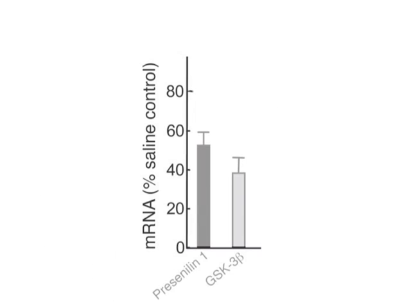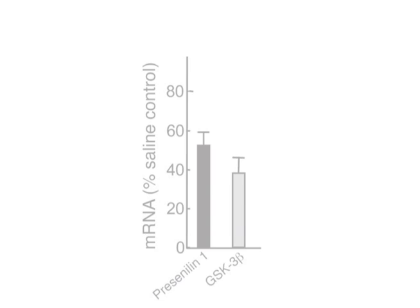In addition, oligos against presenilin-1 or GSK3 beta were infused for two weeks into the right lateral ventricle of non-transgenic mice and mRNA levels assessed. This result showcases the wide array of targets that can be modulated using antisense oligonucleotides. Once mastered, these techniques — both the pump implantation and the bolus injection — can be done in 10 minutes if they are performed properly.